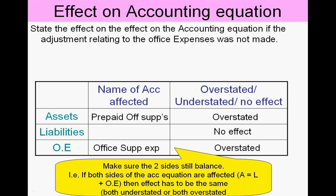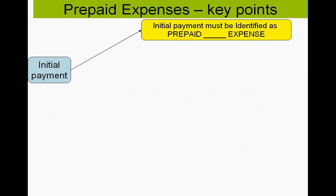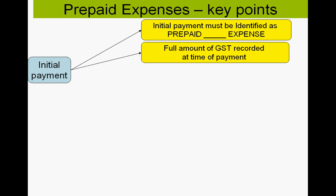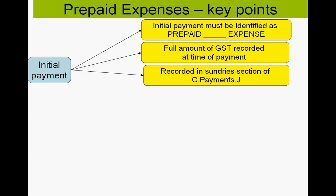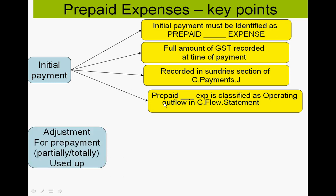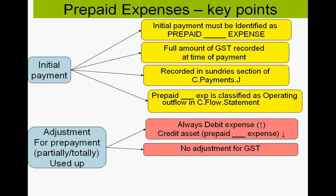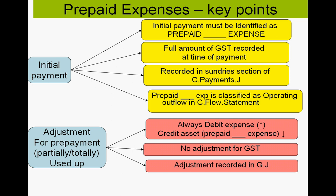Some final points: when making the initial payment, record it as 'prepaid' whatever — prepaid insurance, prepaid rent. Record the full amount in the GST paid section of the payments journal and always place it in the sundries column. When posting to the cash flow statement, record it as an operating outflow identifying it as prepaid rent or prepaid insurance. At balance day, always follow the golden rule — debit the expense, credit the asset. No GST adjustment is needed since the tax office doesn't care what period the GST relates to.